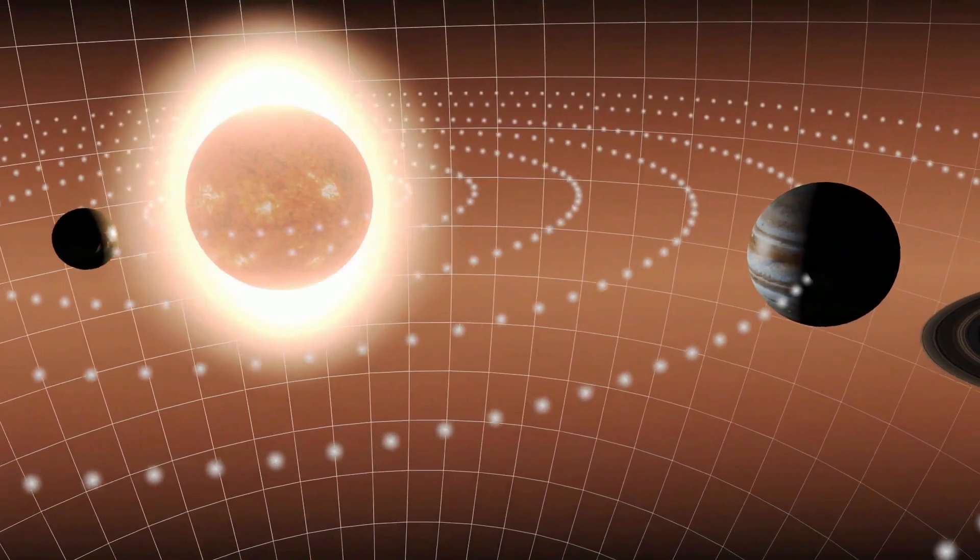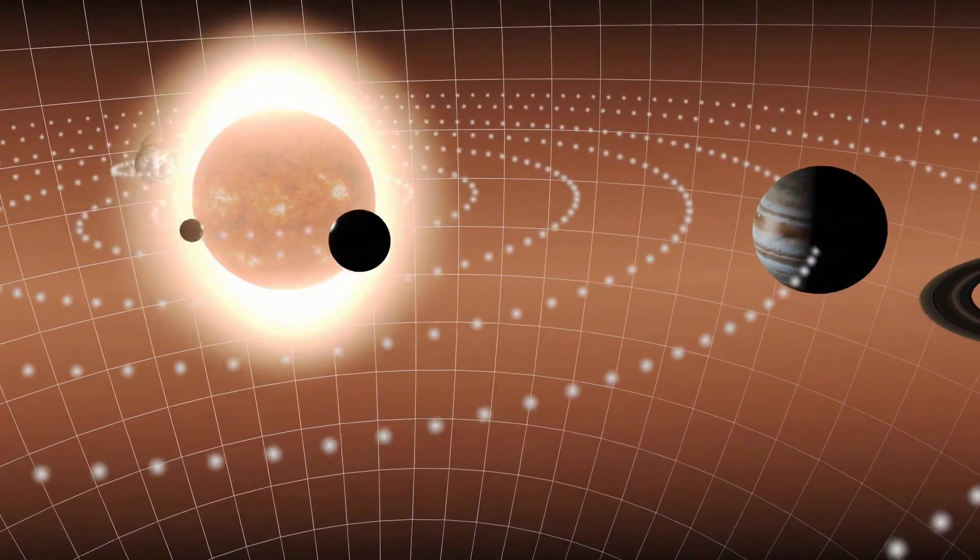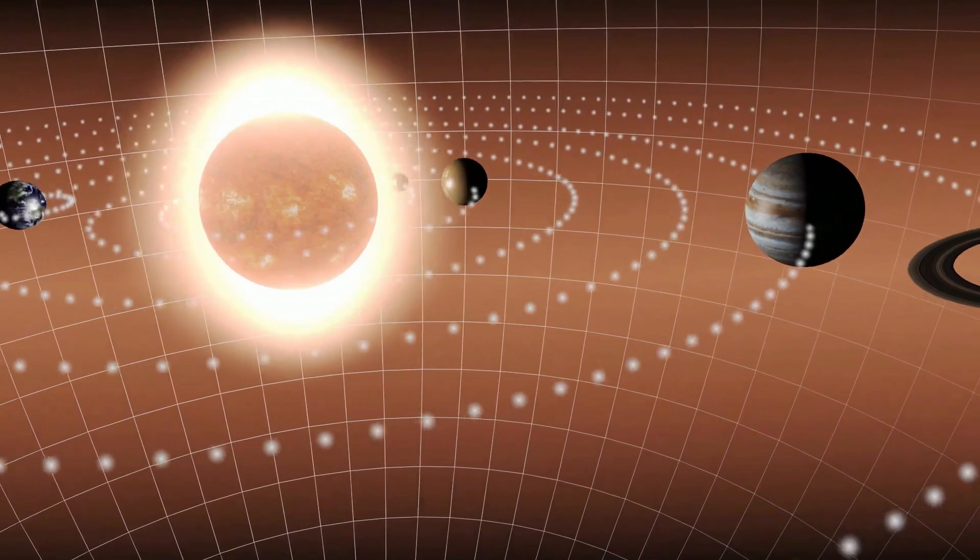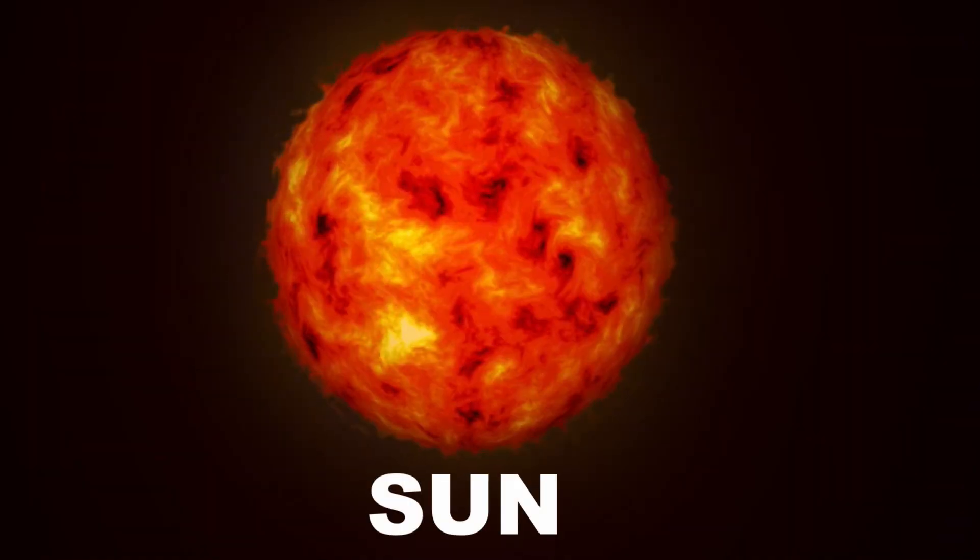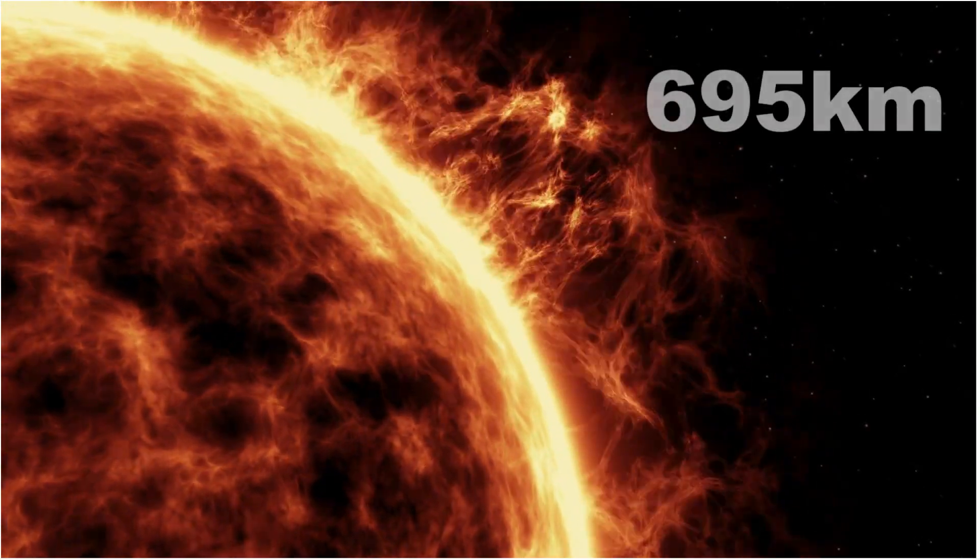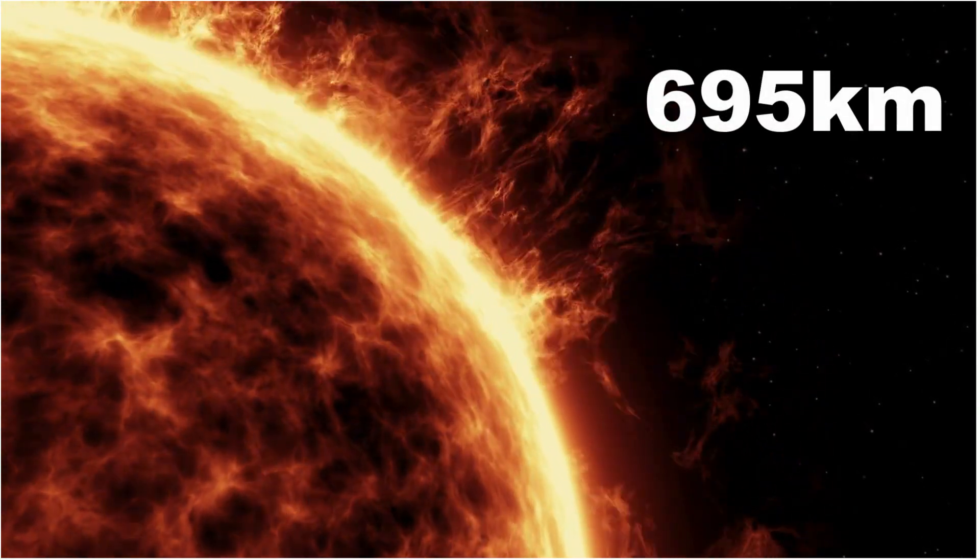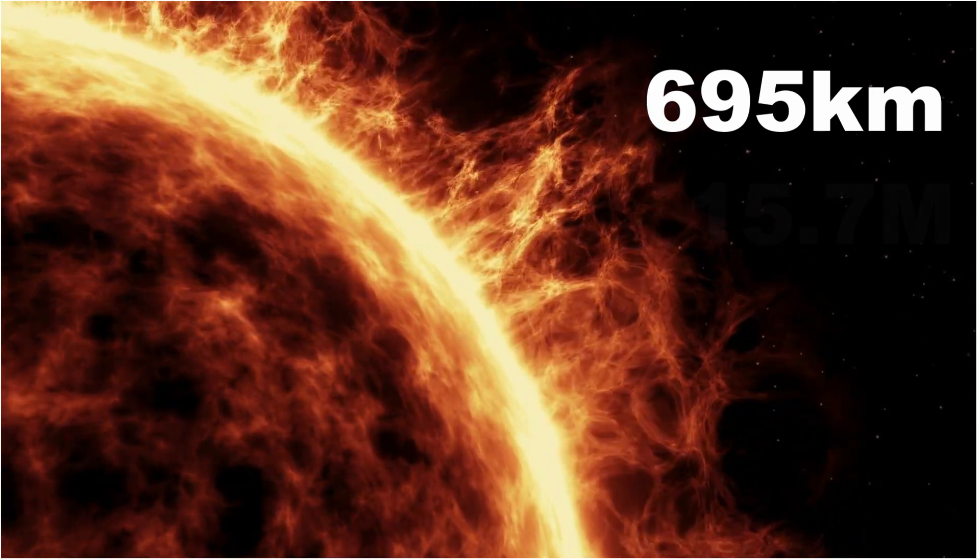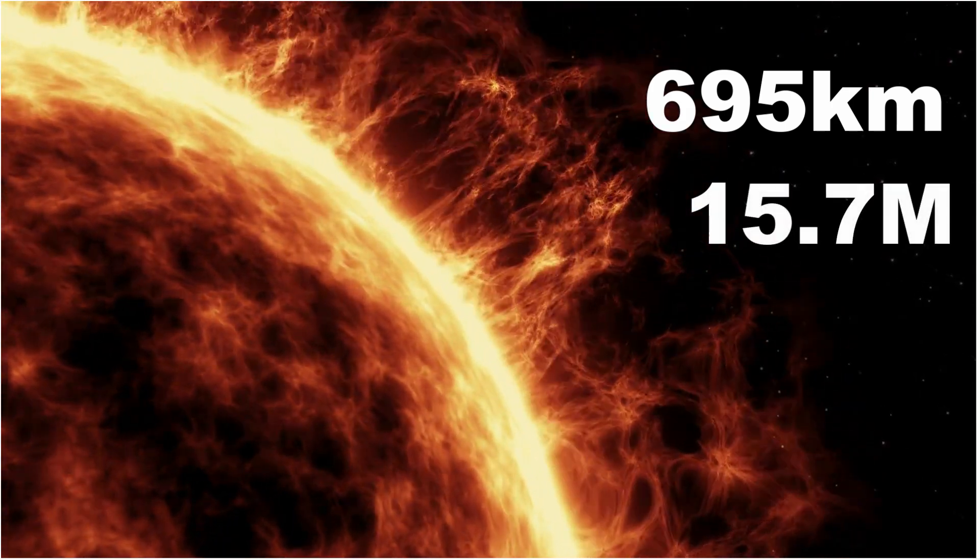The solar system is the planetary system with the sun at the center. The sun is the closest star to Earth, a gigantic ball of flaming hot plasma around 695,000 kilometers wide and with a temperature of over 15.7 million degrees Kelvin.